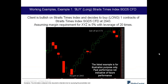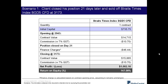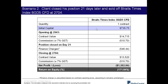Here are some working examples. If you go long one contract of the STI index CFD — buying at 2,943 and selling at 3,173 — with the effect of leverage, the rate of return on equity is approximately 140%. However, being a leveraged product, if you bought at 2,943 and the market tumbled to 2,704, the leverage effect means you could be losing approximately 171% of your initial margin.